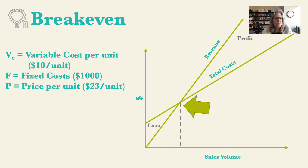Let's look at an example. If the variable cost is $10 per unit — covering raw materials and direct labor — the fixed cost is $1,000, and the price we're selling units for is $23, then our gross margin — as discussed when we covered the income statement — would be $23 minus $10 times the volume, minus $1,000.